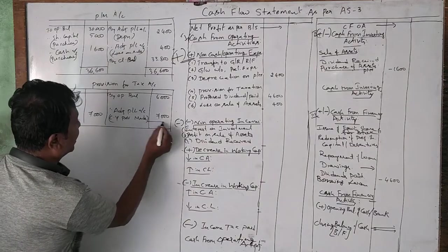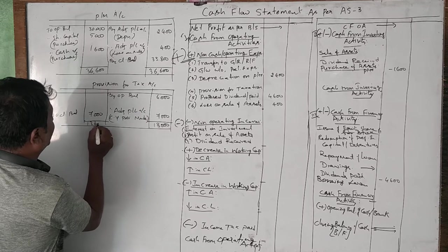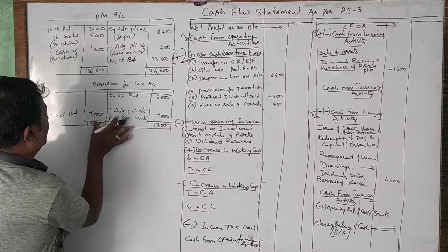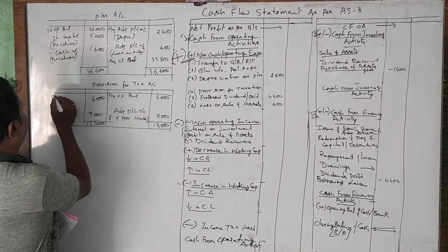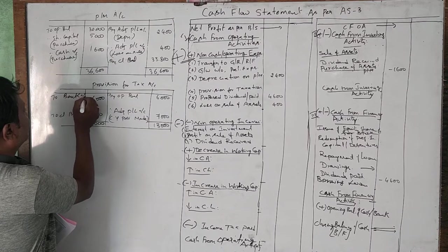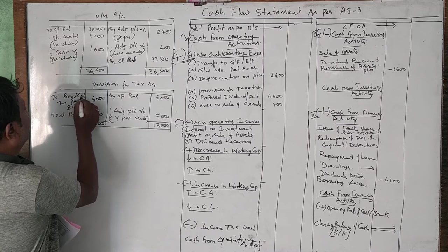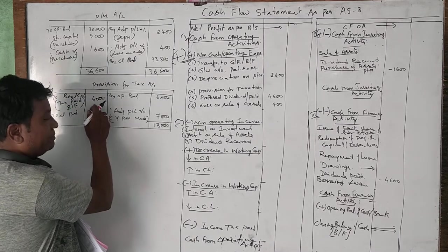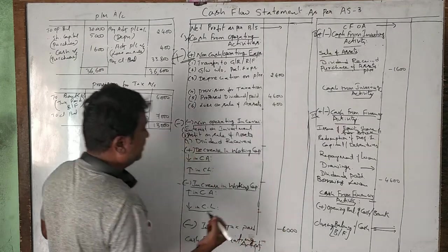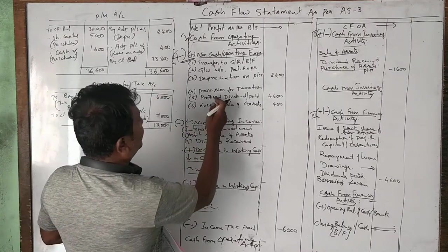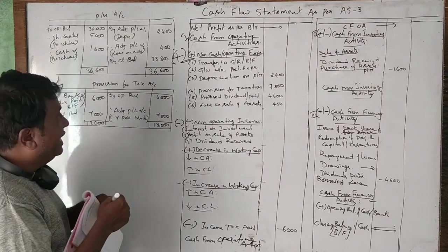If you close the provision for tax account, the total is 13,000. So 6,000 rupees is the tax which we have paid during the year — this is the balancing figure. Whatever tax paid, I am taking it here as minus 6,000 in the cash flow statement, and the provision made during the year of 7,000 is taken as a non-cash operating expense.